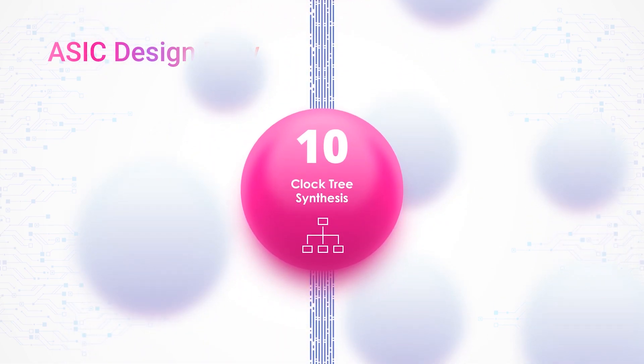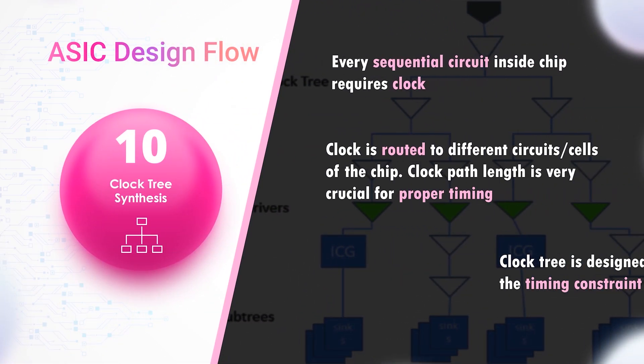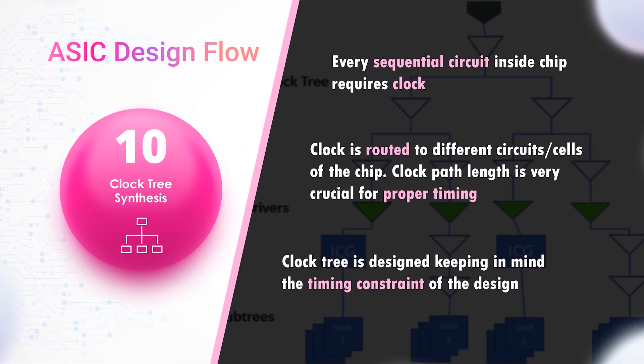Clock Tree Synthesis: Every sequential circuit or standard cell inside the chip requires a clock. In this step, the clock is routed to different circuits or cells of the chip, keeping in mind the timing constraints of the design. The clock path length is optimized to meet the constraints, as a longer path would have more path delay.